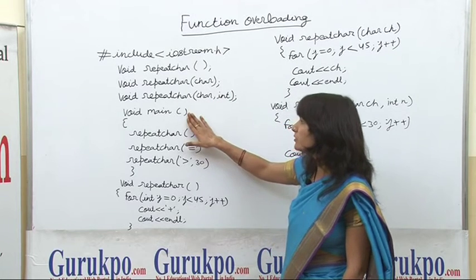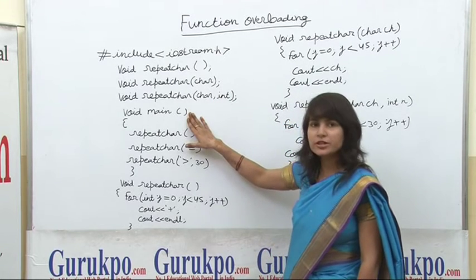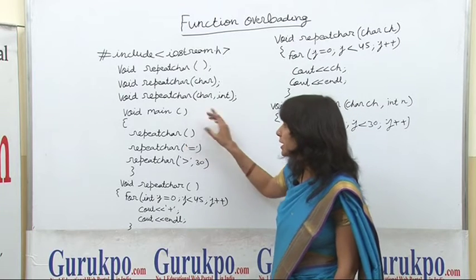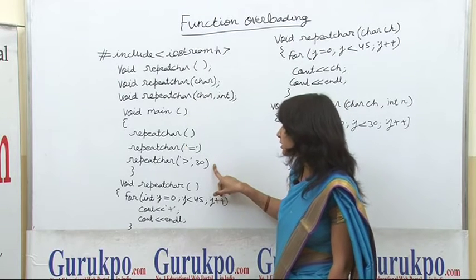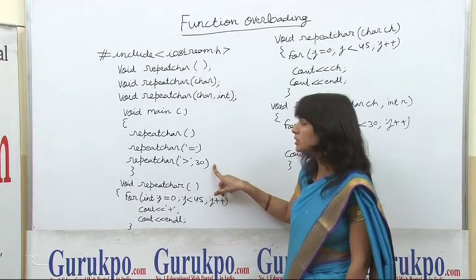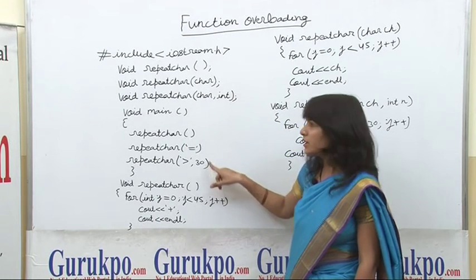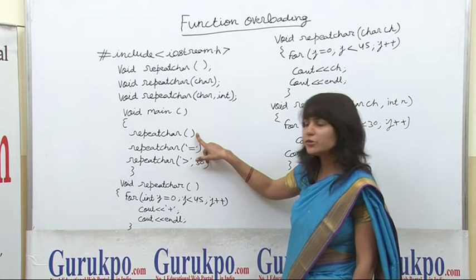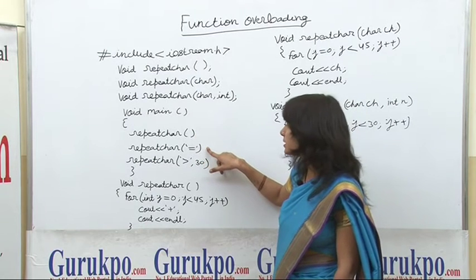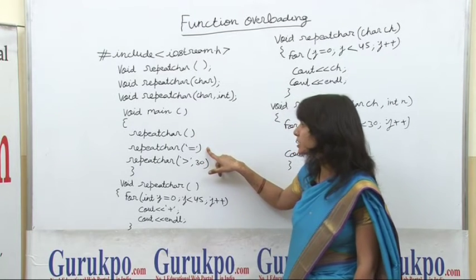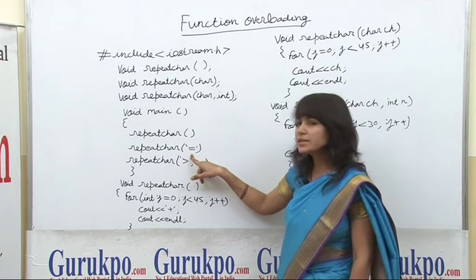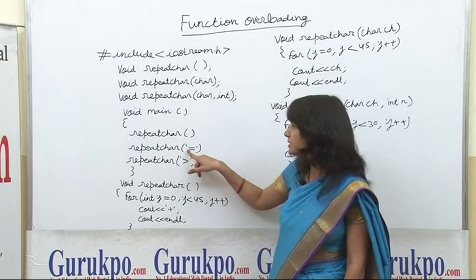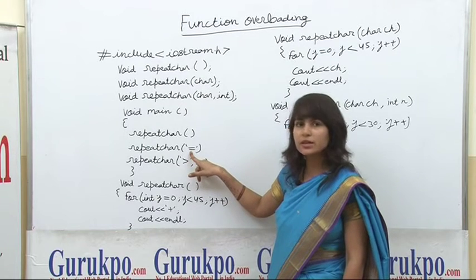Now here we create the main function — this is the void main function — where we call all three functions. The first function is repeat_character with no argument. The second is the repeat_character function, passing a character type argument which is the equals sign.